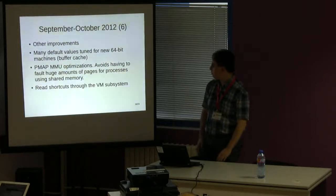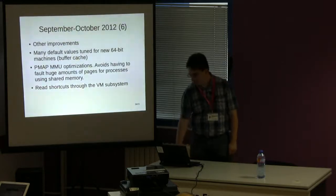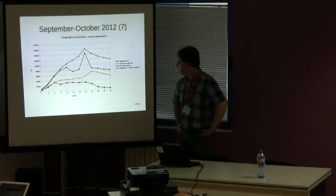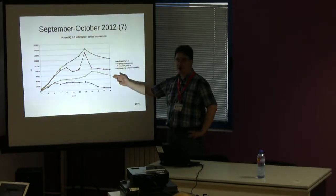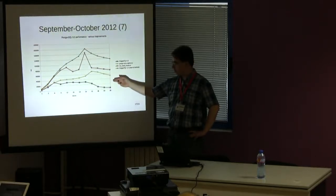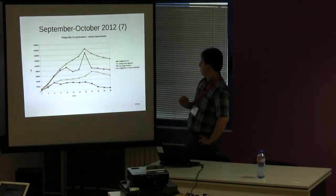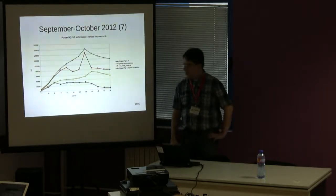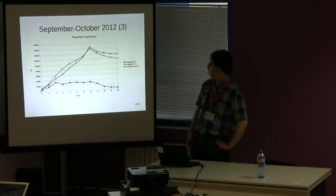Finally, we found we could directly read file data from the VM cache subsystem — a so-called read shortcut. This graph shows a few of the improvements individually. The base DragonFly 3.0 performance was improved tremendously by using shared page table information. Reading file data directly from the virtual memory cache improved performance even further. And finally, the new scheduler — the green curve — gives us something more or less equal to Linux performance.